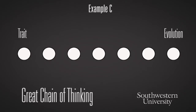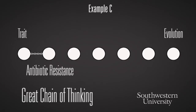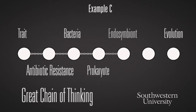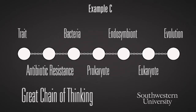One more option. Trait again in the first circle and evolution at the end. A trait might be something like antibiotic resistance — traits common in bacteria. Bacteria, as you know, are prokaryotes. Prokaryotes can be endosymbionts; they can live within eukaryotes. That leads to the eukaryotic theory of evolution. Sometimes, as in option A, you might work on a detailed level of understanding a single topic using words that tightly connect ideas. In other cases, like option C, these might be bigger-picture links if you have words that come from different topics.